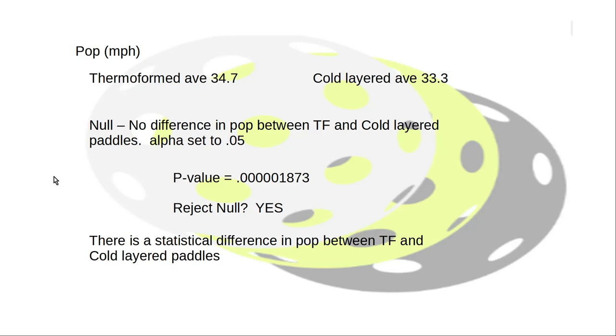Now what's that mean for the consumer? Well, a lot. But does power and pop mean a lot to you, and are you willing to spend more? Because the average of a thermoformed paddle is $194 and the cold layer is $142. That's a big, it's like 50 dollars.